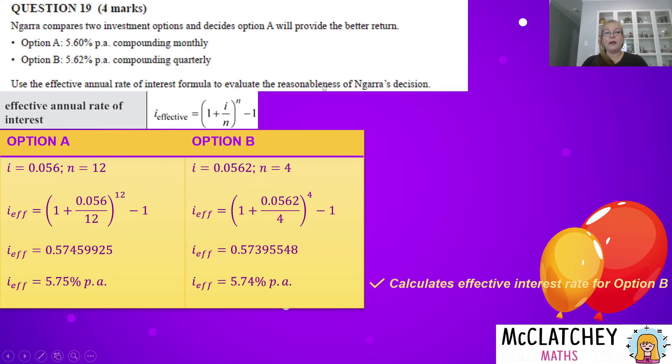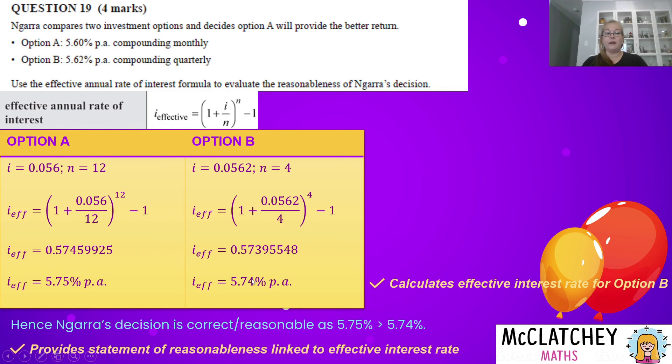Now we actually need to do the evaluation. Was Nara correct? Nara said option A is a better return. Well, they've both got a 5. They've both got a 7. But this one here has a 5, whereas that one has a 4. So Nara is actually correct. So we need to state her decision is correct. Notice they've got the word reasonable here. So it wouldn't hurt to chuck the word reasonable in there. It's a reasonable decision she's made. You need to give a reason though. That's what evaluation is, is giving a reason. So it's not just enough to say Nara's decision is correct. You need to say why, because this one is bigger than that one. And that will give you your final mark for question 19.